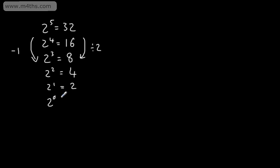on the left-hand side, our next value will be 2 to the power of 0. All I've done is subtracted 1 from the power. On the right-hand side, we need to divide by 2. 2 divided by 2 gives me 1.